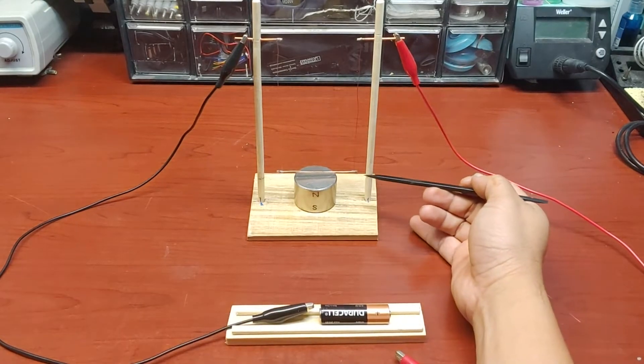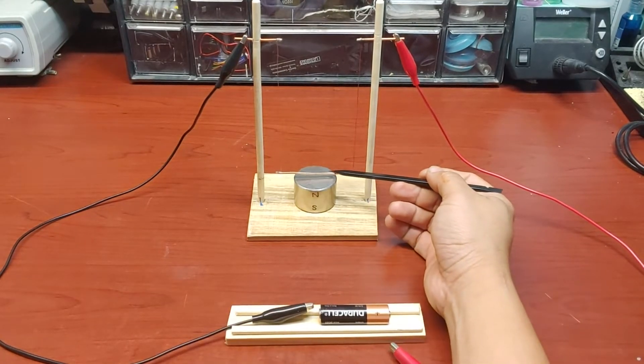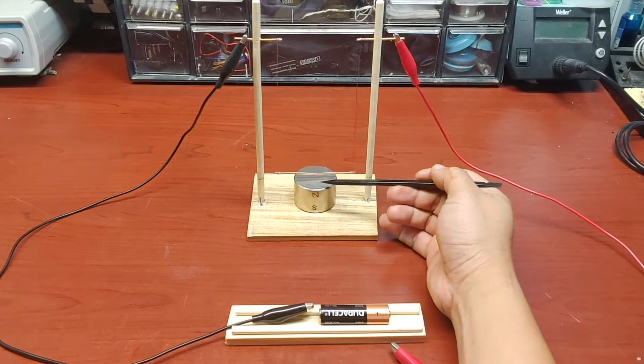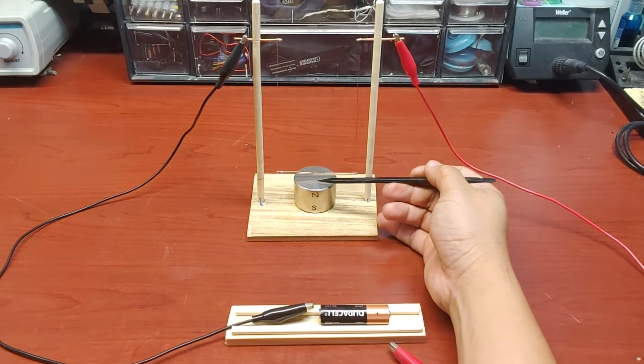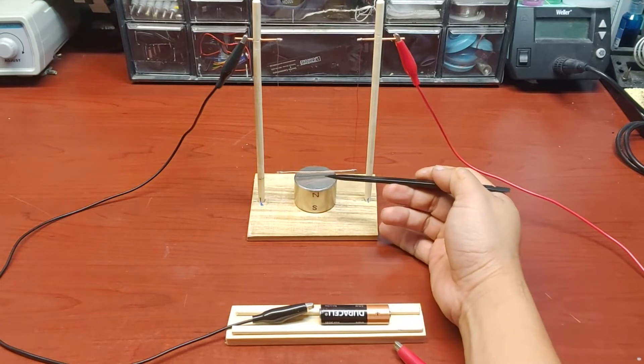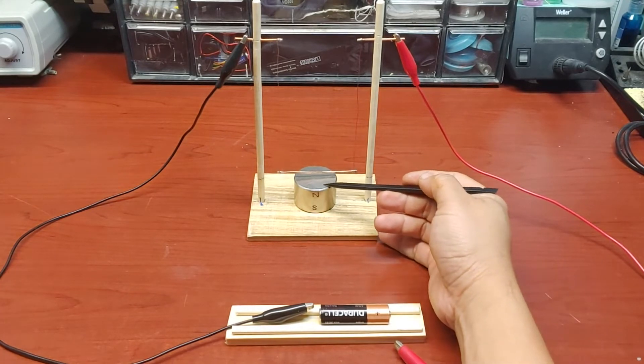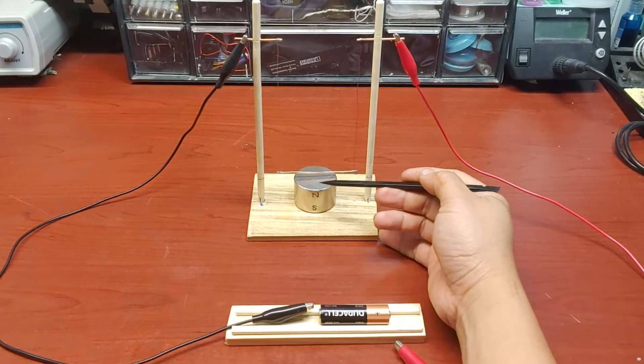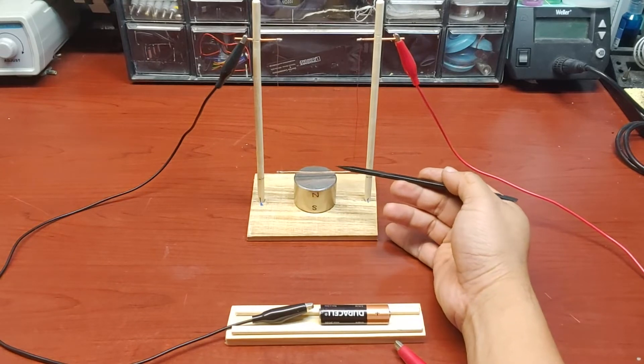When electric current flows through this conductor, it generates an electromagnetic field around it, and that field interacts with the magnetic field of this permanent magnet, causing the conductor to move.